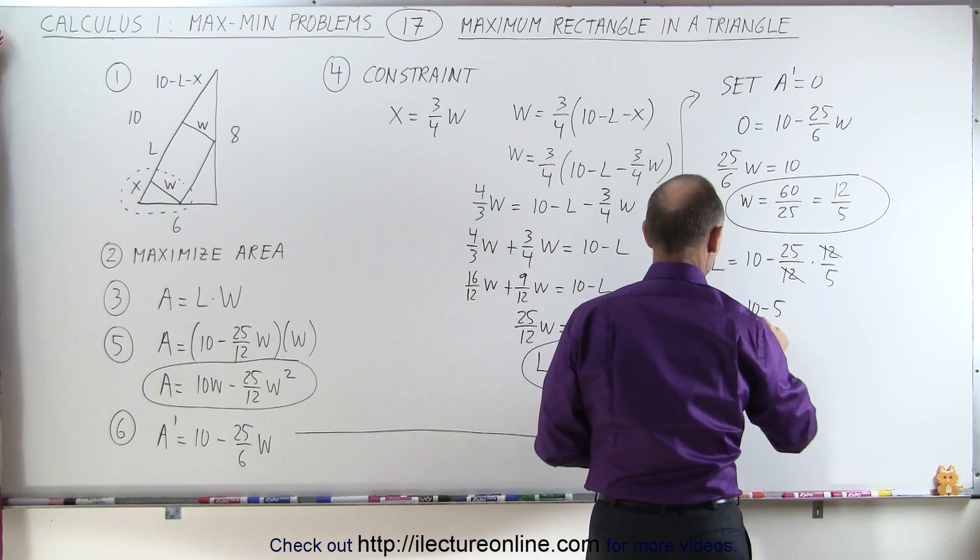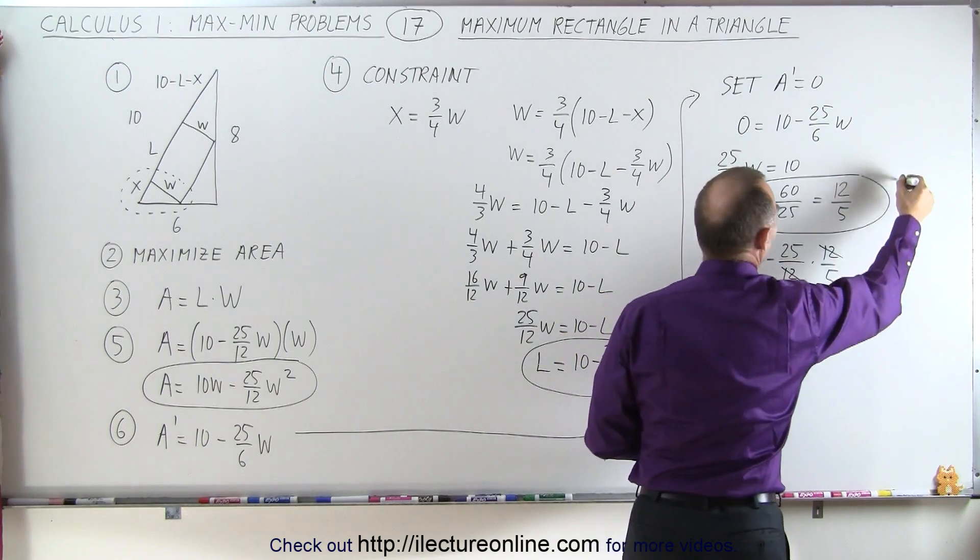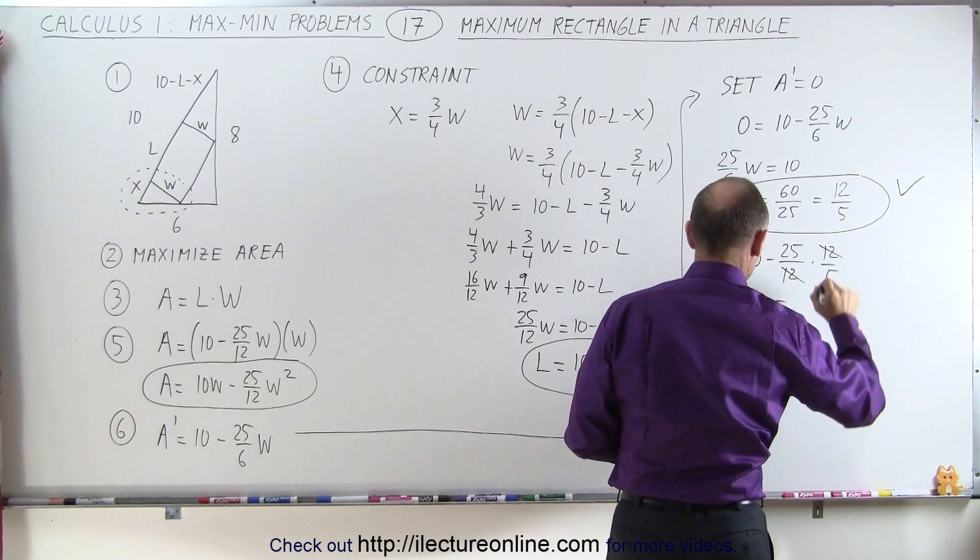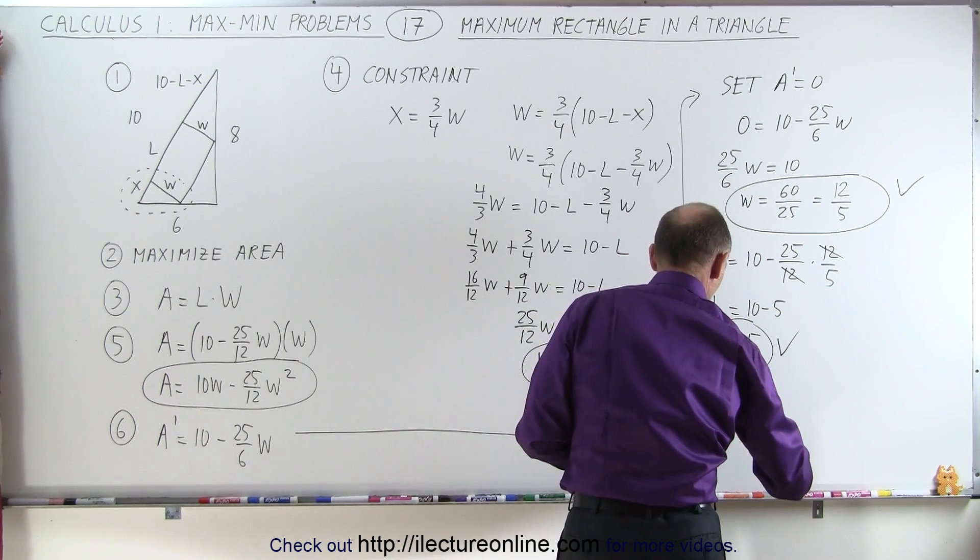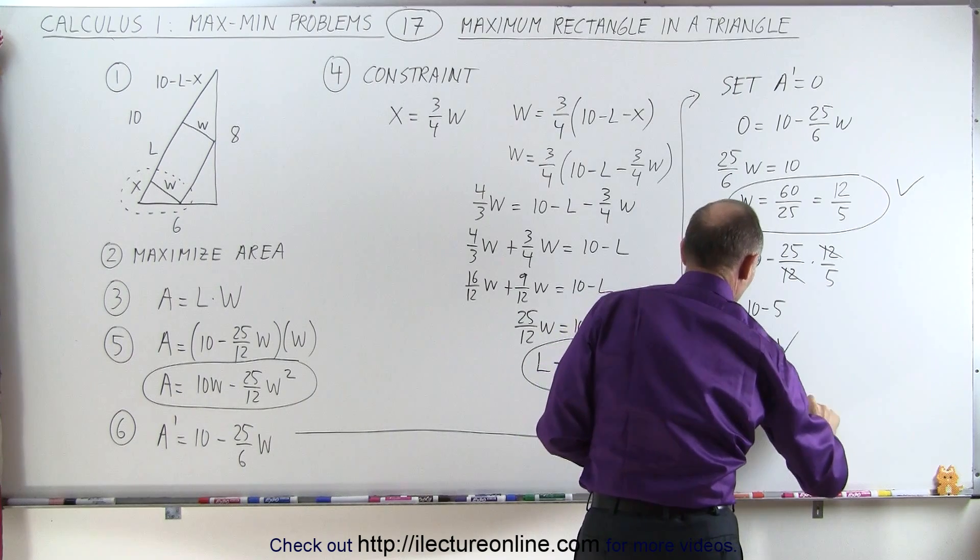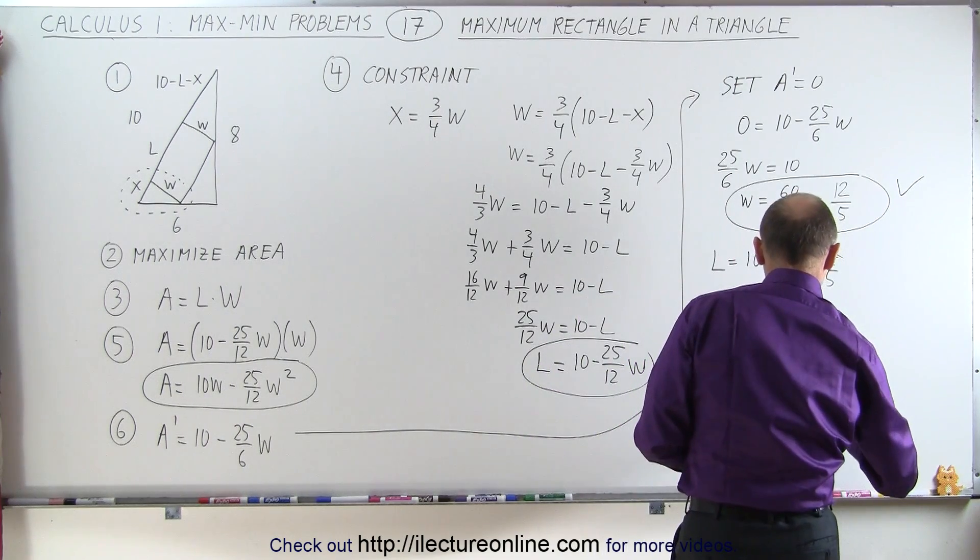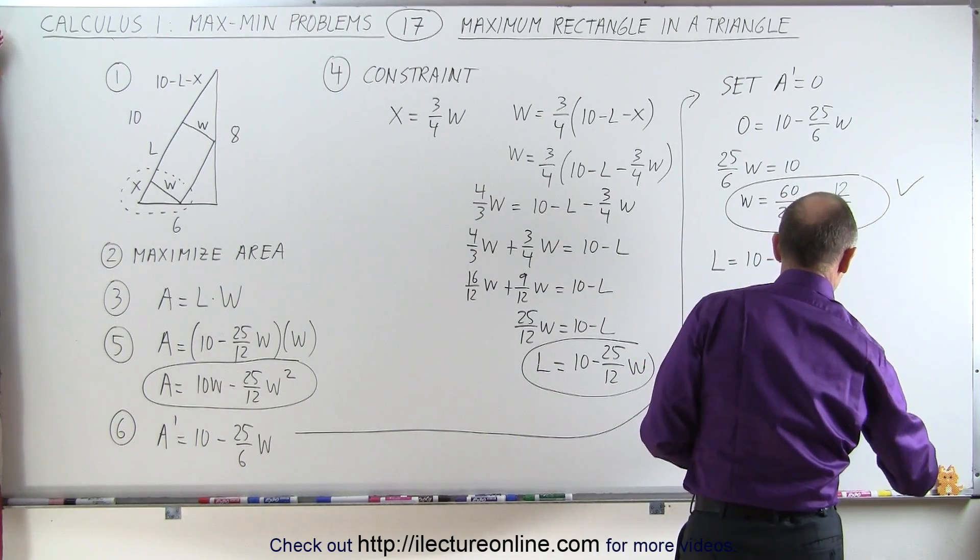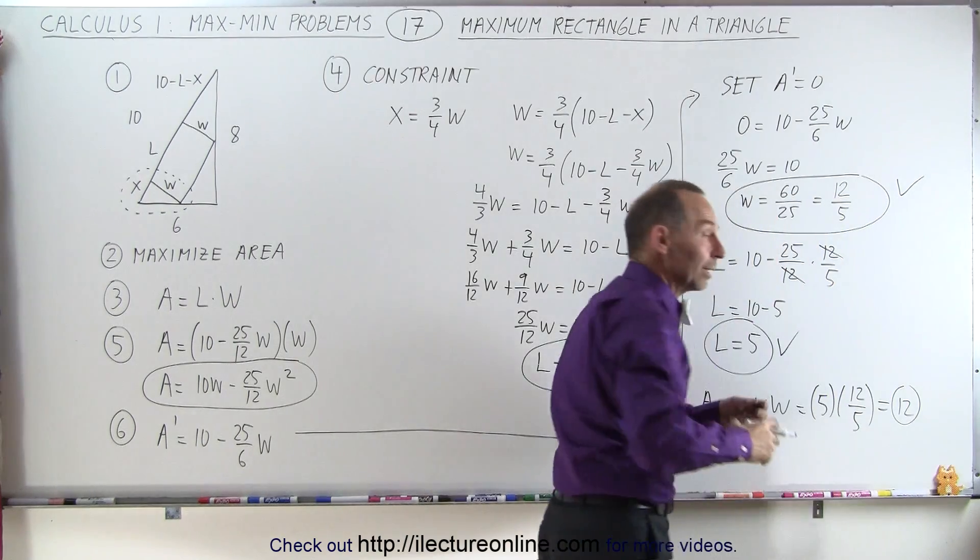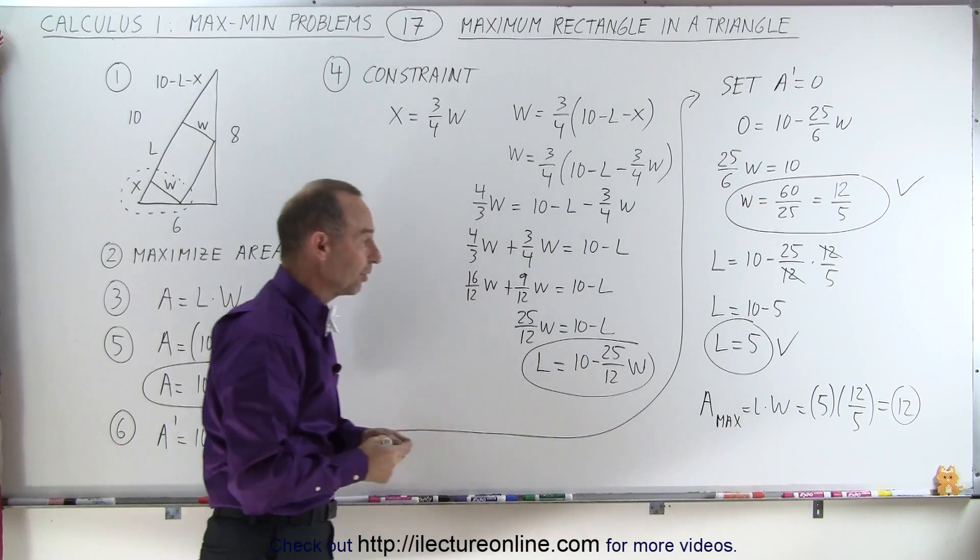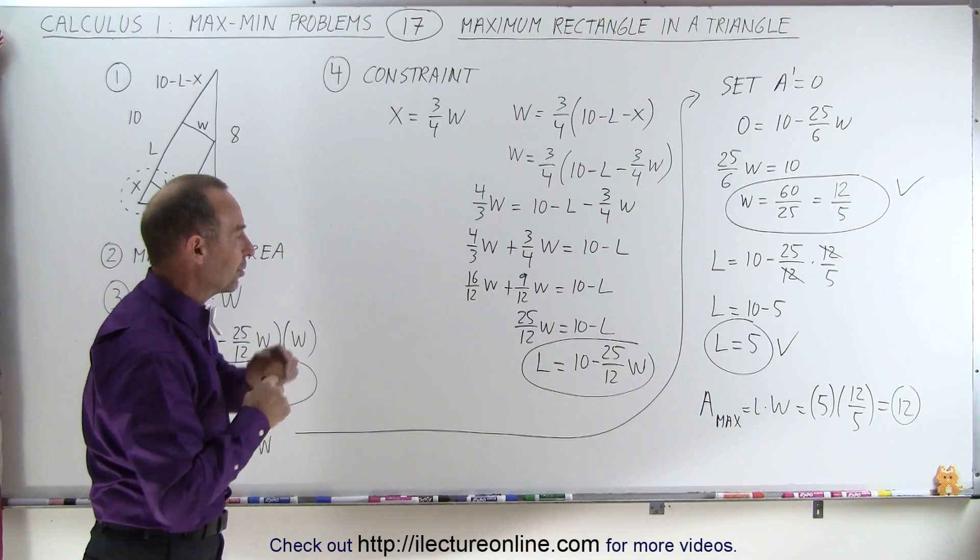So length equals 5. So here we go. We have a width of 12 over 5, a length of 5. That means that the maximum area, which is length times width, is equal to 5 times 12 over 5, which is equal to 12. Again, that would be square inches, square centimeters, square meters, whatever the units are that you're using.